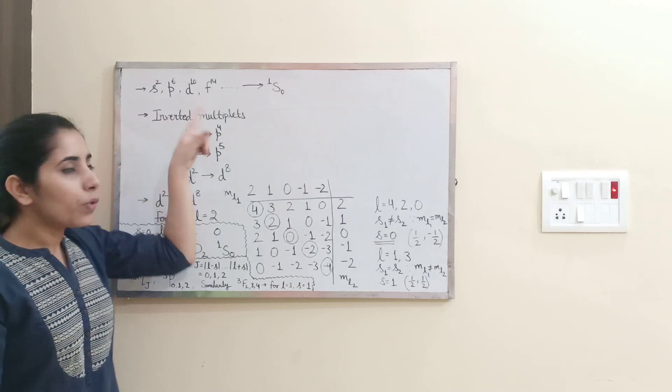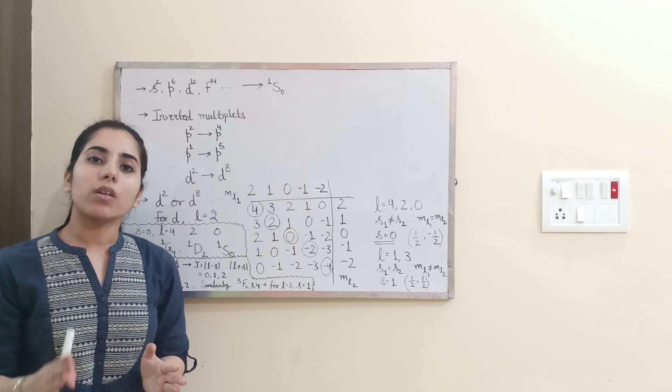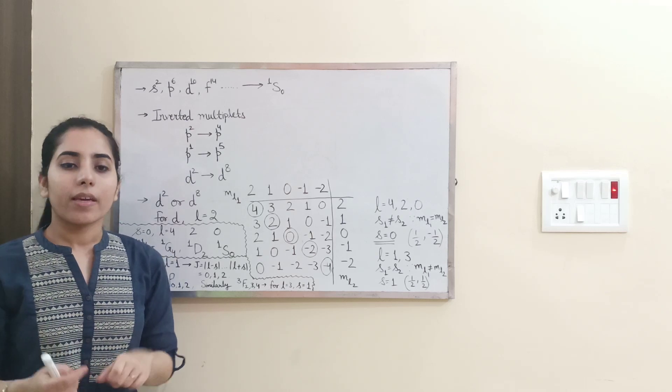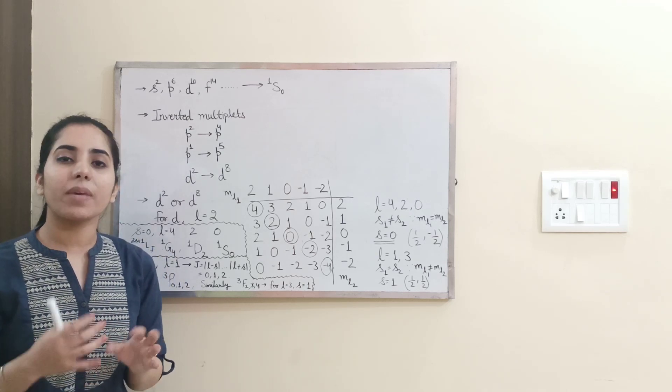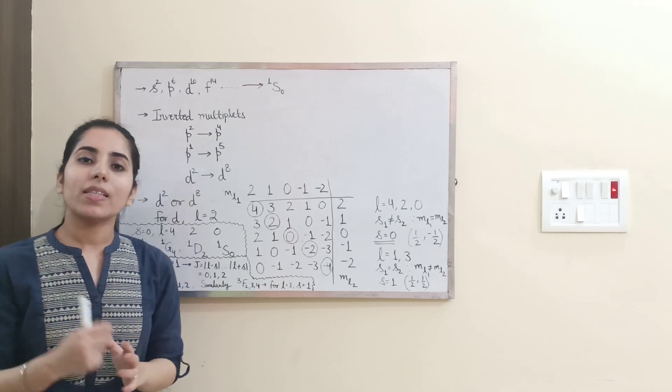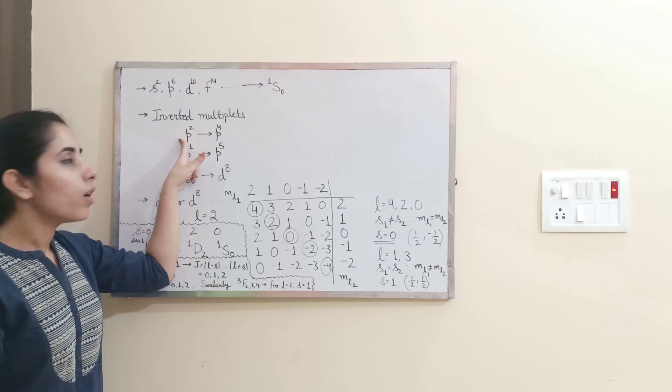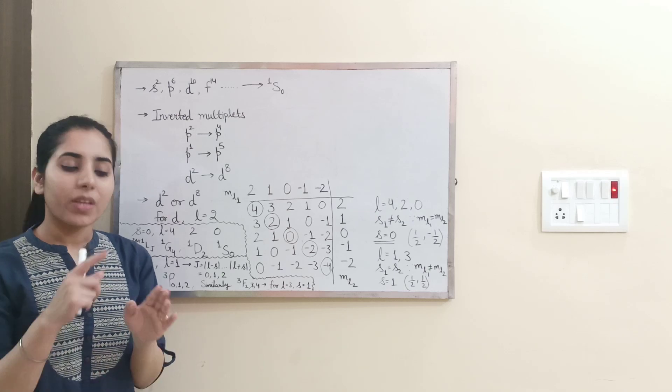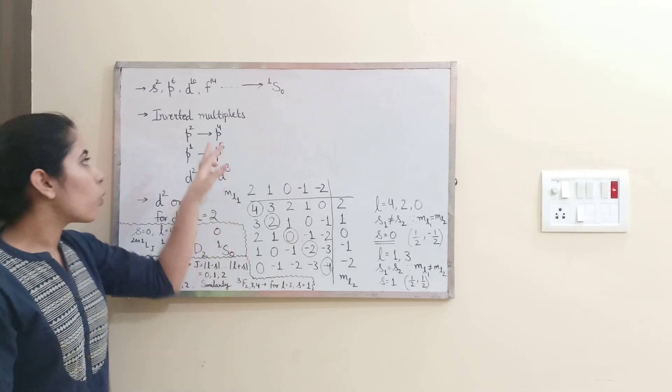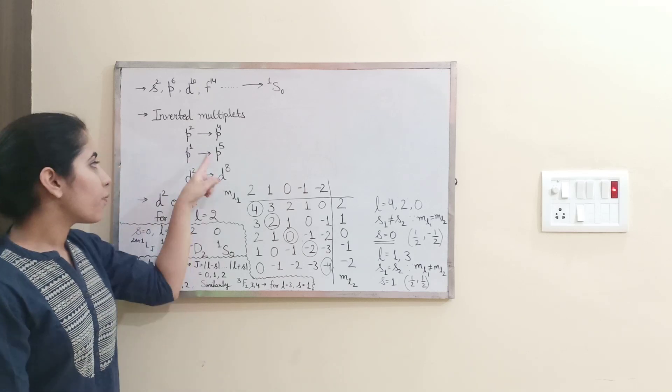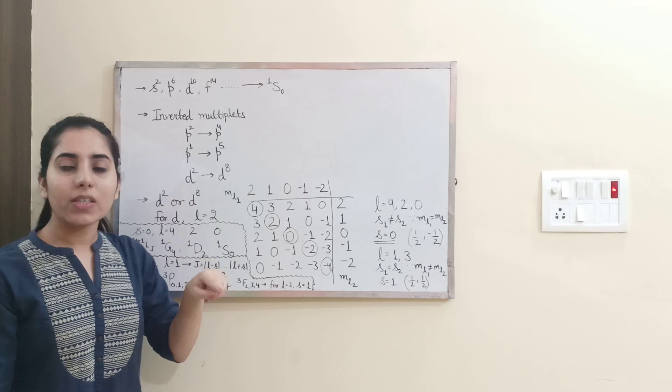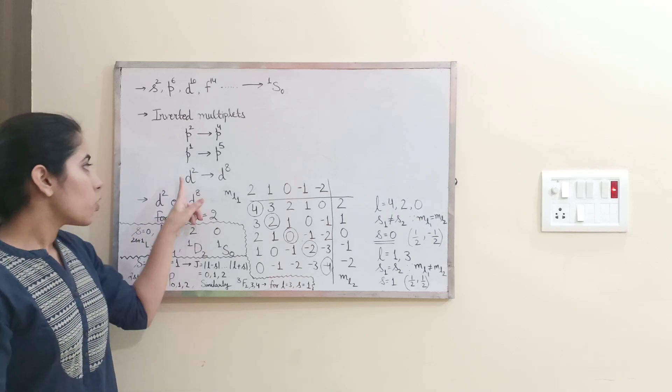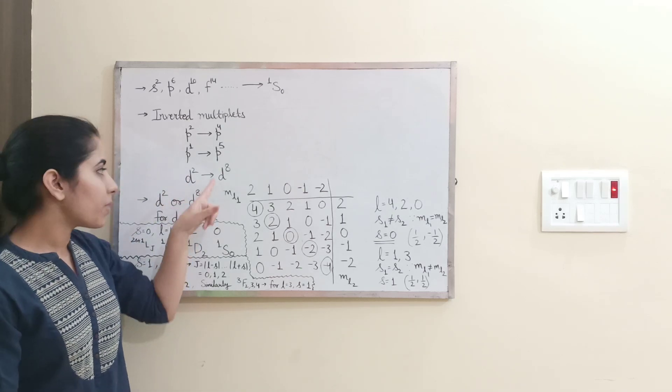Next thing. Guys, for inverted multiplets, the spectroscopic term notations will always be same. Okay, what I mean by inverted multiplets, see, in the P orbital or in P shell, we can fill maximum how many electrons? 6. Let's say right now I am talking about P2. So P in which 2 electrons are present, its inverted multiplet will be P6 minus 2, that means P4. Similarly, P1 inverted multiplet will be P5. For D2, it will be D8 because in D we can fill just 10 electrons, maximum number of electrons. So for D2, D10 minus 2, that means D8.